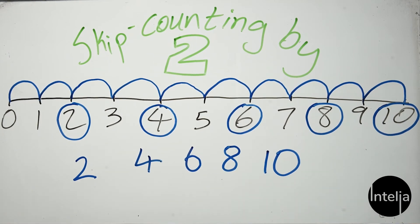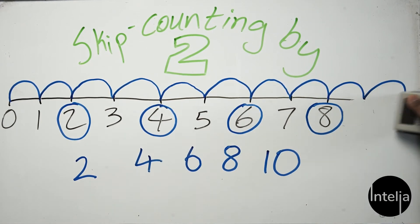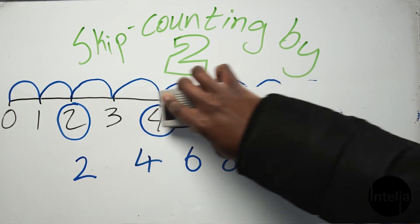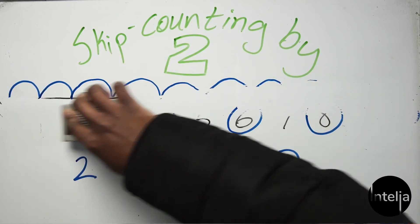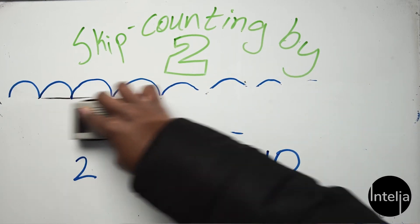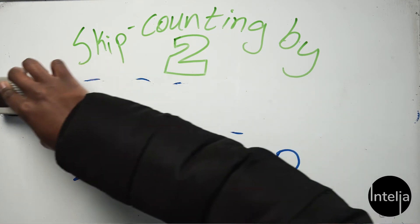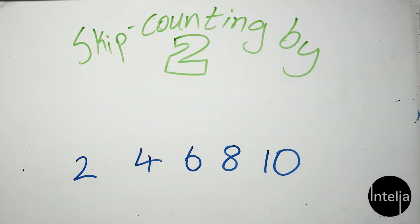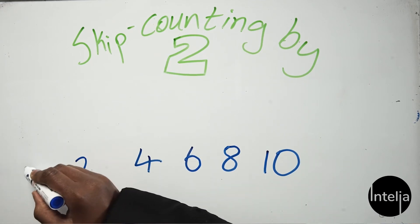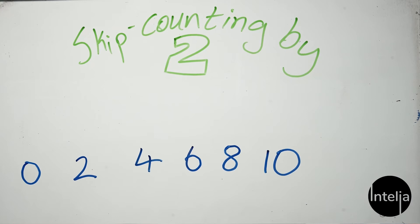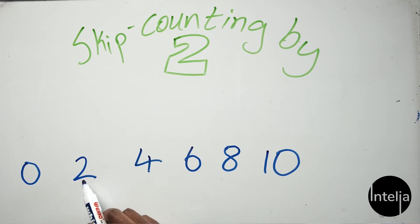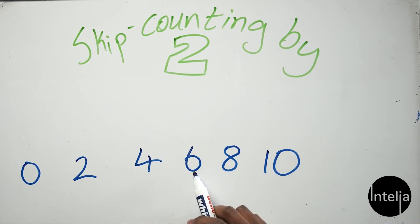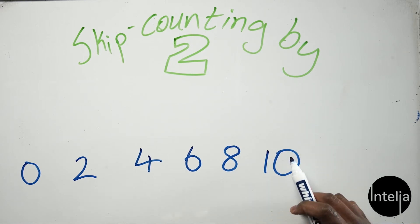Now let me erase these, and let's count in twos. We're only going to have our numbers in twos. There we go. And if you like, you can put zero at the beginning — zero. There we go.